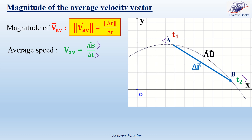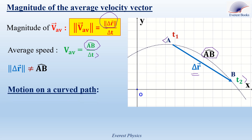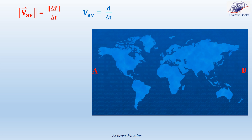The travel distance between A and B is equal to the arc AB. But in the figure, the actual travel distance AB is different from the magnitude of the displacement vector. Looking at the last two equations, the magnitude of the displacement vector is different from the actual travel distance between A and B. Therefore, for motion on a curved path, the magnitude of the average velocity vector is different from the average speed.